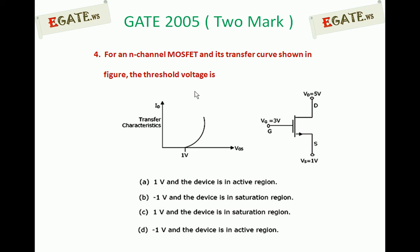For an N-channel MOSFET and its transfer curve shown in the figure, the threshold voltage is: A. 1V and the device is in active region. B. Minus 1V and the device is in saturation region. C. 1V and the device is in saturation region. D. Minus 1V and the device is in active region.